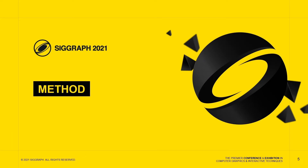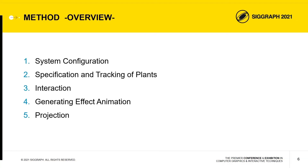Next, we'd like to talk about our method. This is the overview of our method. Firstly, we set up our system. Secondly, projection targets are specified and tracked. Thirdly, touch interaction is detected. Fourthly, effect animations are generated using detected touch events. Finally, generated effects are projected onto real targets.